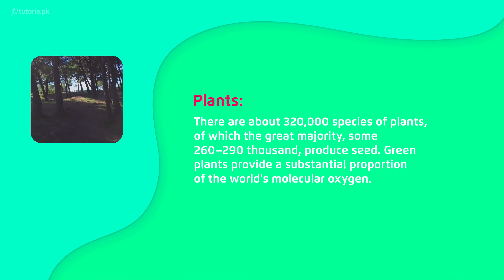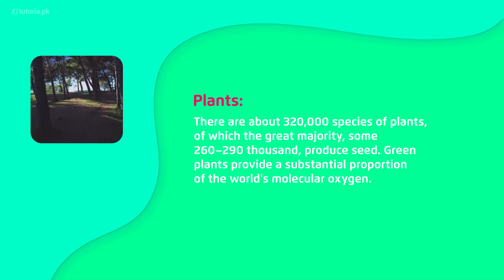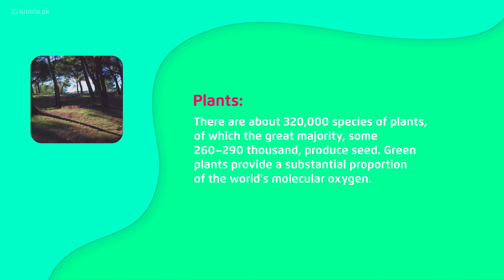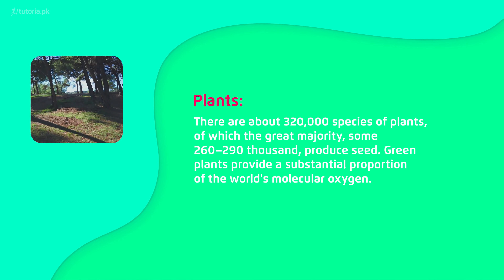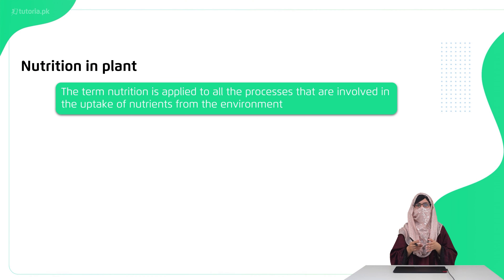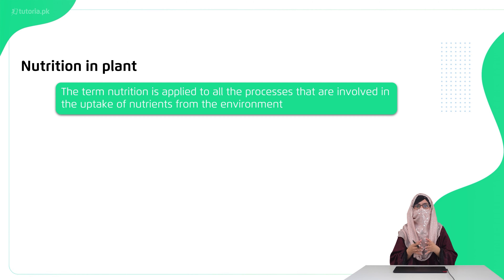Plants need to maintain photosynthesis and their forms and structure. We will discuss this in this chapter. First, let's talk about nutrition in plants. We all eat food because food provides nutrition — nutrition is the elements and ingredients that are important for your body's daily functioning and development.